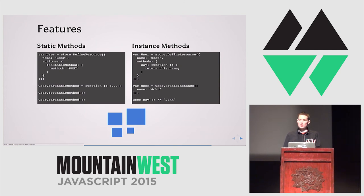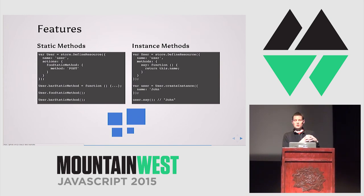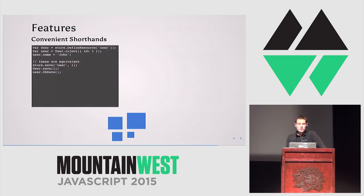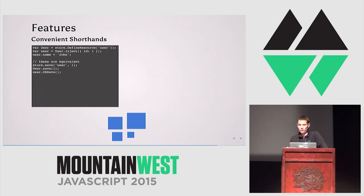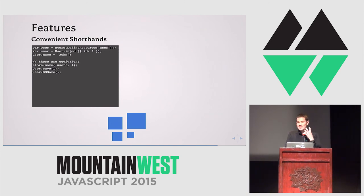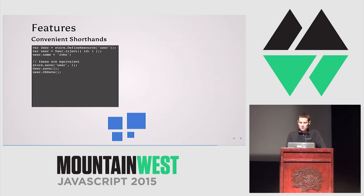Some people like to work with POJOs and have services that operate on them; others like to wrap their data with constructors and attach logic to instances — it's a style preference. There are also convenient shorthands. If you're using Angular, you can use dependency injection to pass around various resources, or just pass around a reference to the store and tell it what resource to operate on. Some methods are proxied through to instances — so you can have a reference to an instance and tell it to save itself, and it will have the store save the instance.